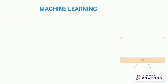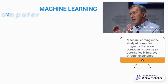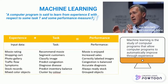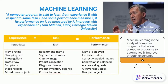Machine learning is a computer program that learns based on experience over some tasks and measured by some performance. An example is Netflix, which learns based on the viewer's rating on its movie recommendations.